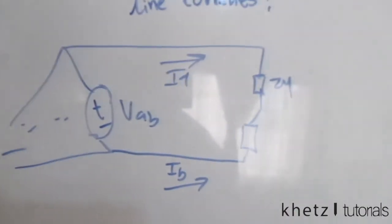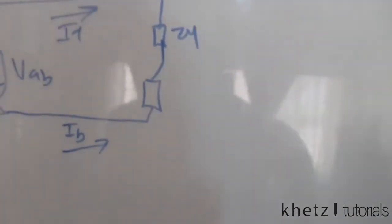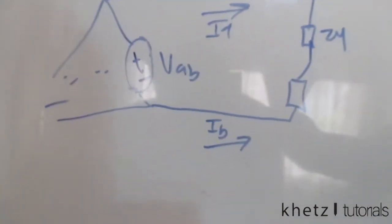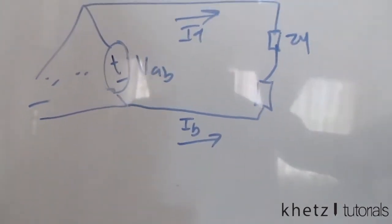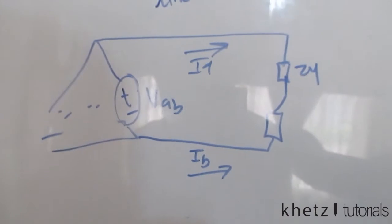What we want to do is to actually find a formula which we can use to find what we're actually looking for, which are the line currents.